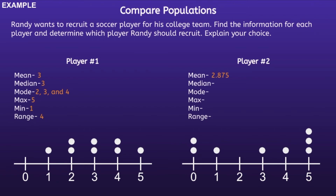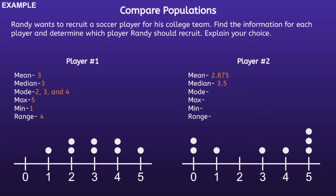Median, or the middle number. So we start with the bottom number, cross it out, and then cross out the top number. When we do this, we're only left with 2 numbers: 3 and 4. So I have to find the average of those numbers. 3 plus 4 is equal to 7, and 7 divided by 2 is equal to 3.5. So the median for player 2 is 3.5. Mode — if we look at the line plot, we can see that the number that appears the most is 5. Max, or maximum — the biggest number is 5. Min, or minimum — the minimum number is 0. And finally, range — if we take the maximum and subtract away the minimum, we can see that the range is going to be 5.